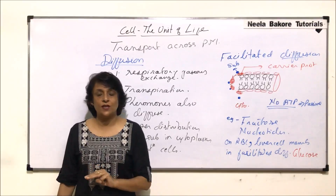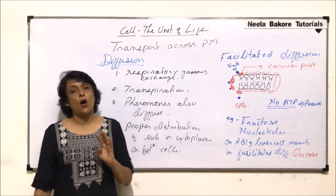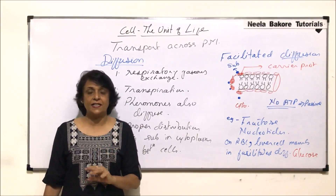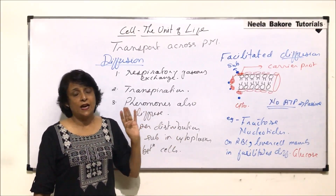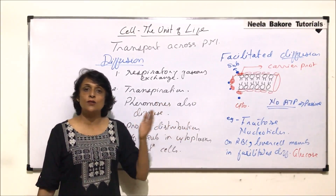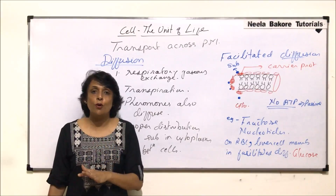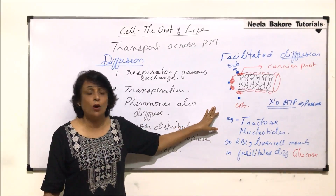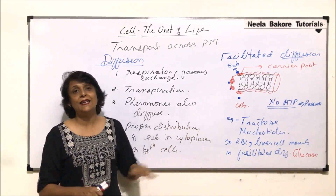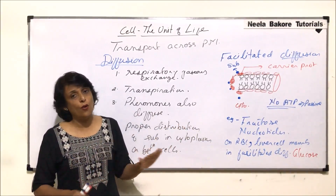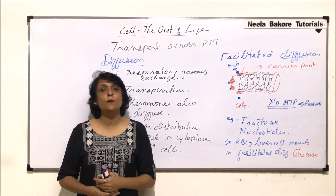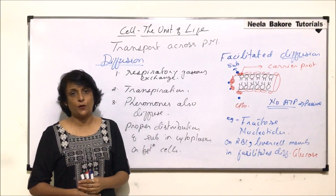So we are now done with all three passive processes: osmosis, diffusion, and facilitated diffusion. In all these cases, movement is from higher to lower concentration, continues until equilibrium is reached, and no ATP is consumed. In the next part we will take up active transport.